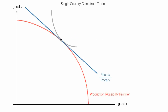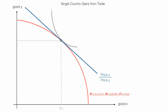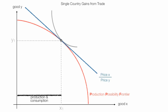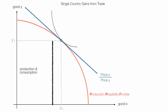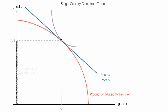At this point, there are no imports and no exports. The country will consume and produce X1 — that distance right there — and also produce and consume Y1 — that distance right there. This is the situation before trade.